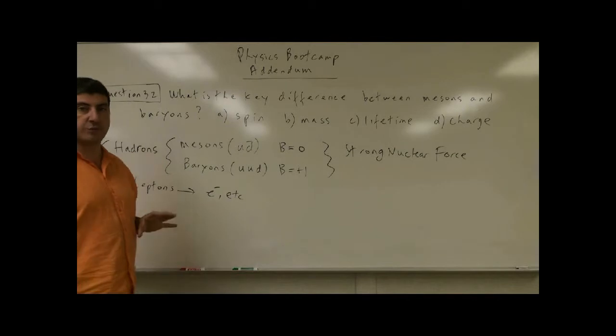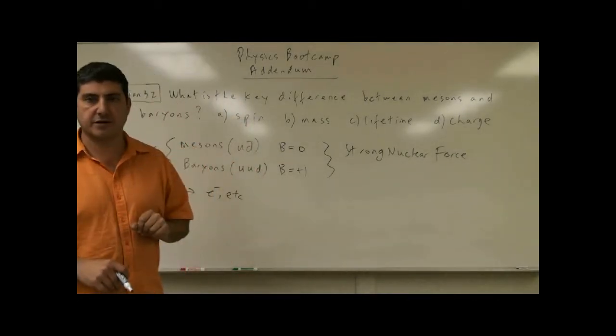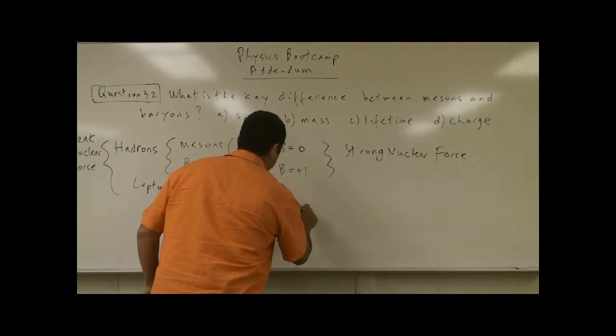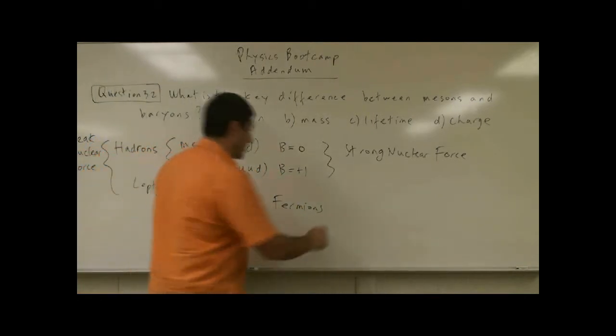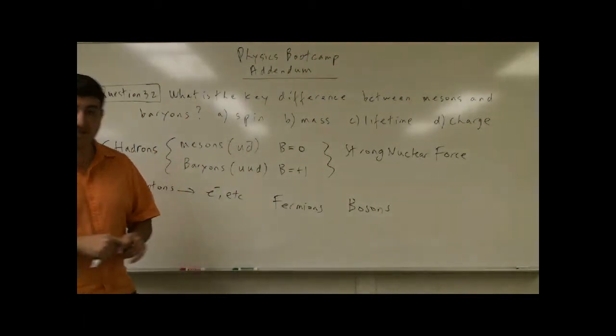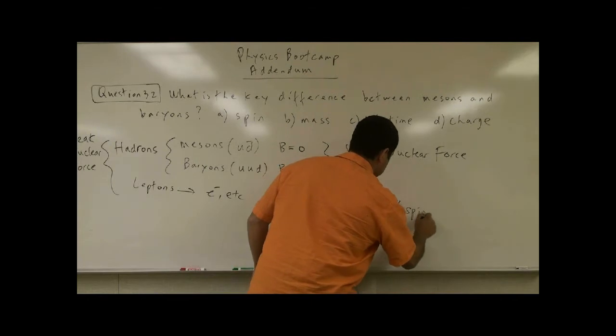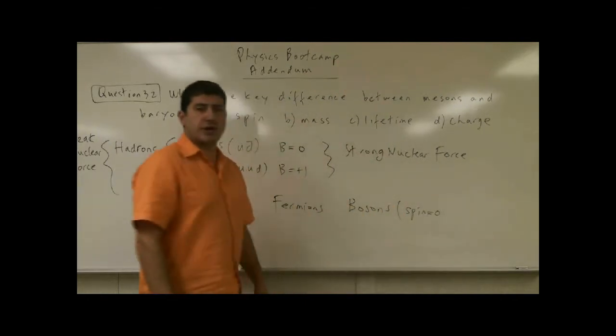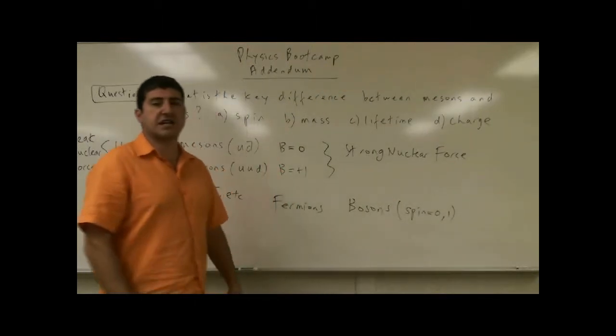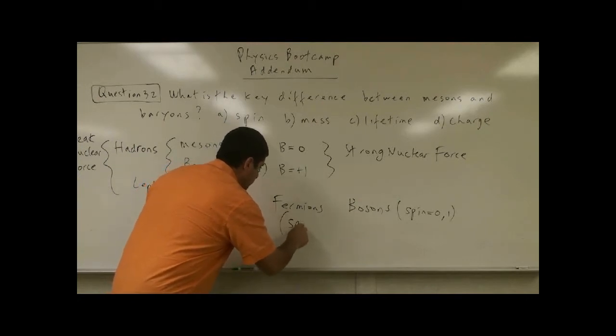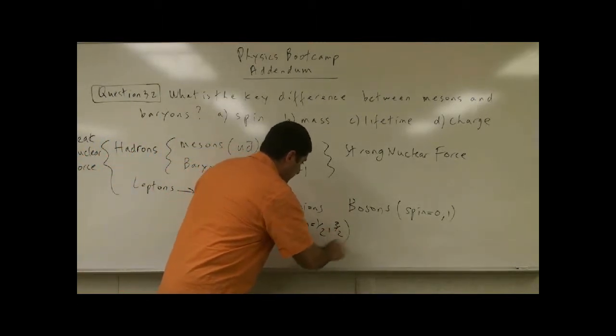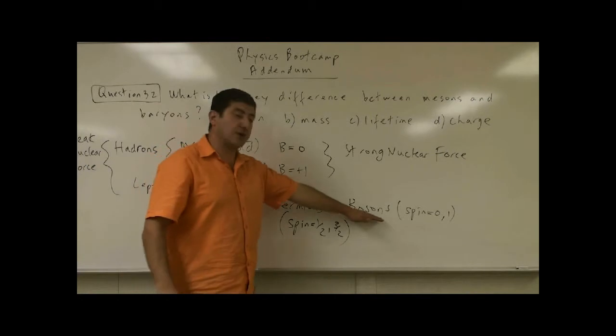Now, out of these forms of matter, there's two general kinds of matter. One, which are known as fermions, and the other that are bosons. Bosons have spin of zero. They could also have maybe spin one, but generally they will have spin zero. Fermions have spin half. Maybe they could also have spin three halves. Now, what are the bosons?